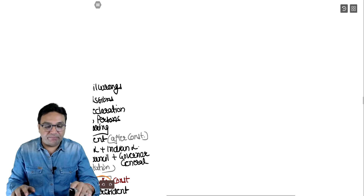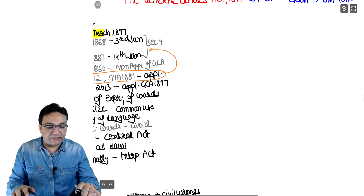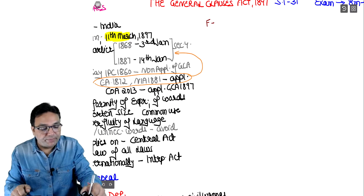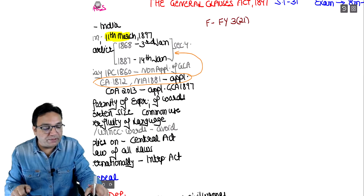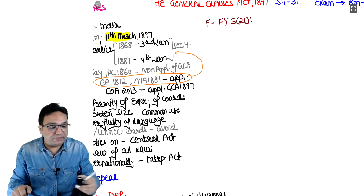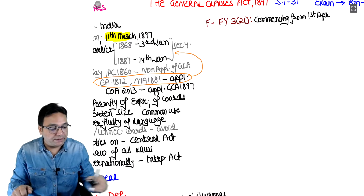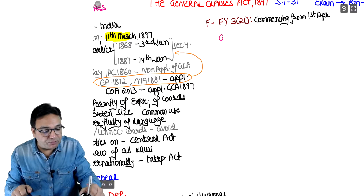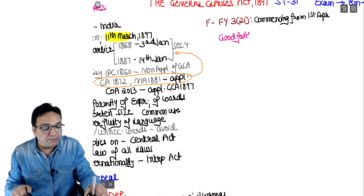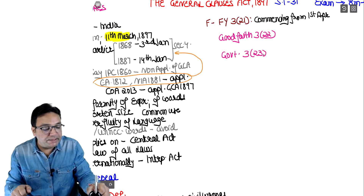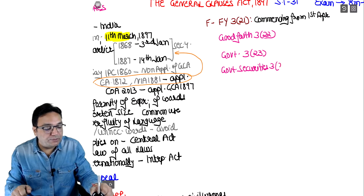After E, we go to F - only one definition, which is 'financial year' in section 3, subsection 21. Financial year commencing from the first day of April - so understood, it goes till March. Going to the G part - there are several definitions, but the most important is 'good faith' in subsection 22. Then 'government' in subsection 23, and 'government securities' in subsection 24.